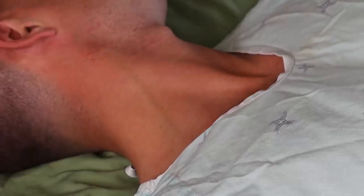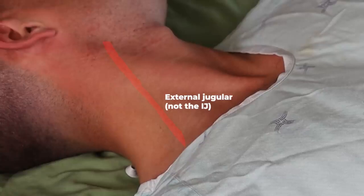By the way, that prominent visible vein on Dr. Franco's neck is the external jugular. Sometimes medical students will mistake that for the real target.